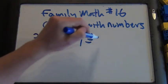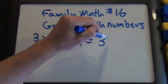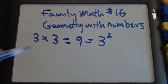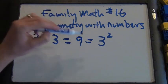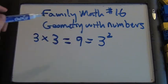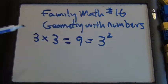This can also be written like this — three with a little two on top. Does anybody know how to read that? Three squared. Three squared — I know exponents! You know exponents? Awesome. So three times three, which is nine, is sometimes written as three with this little two on top, and you read that as three squared.